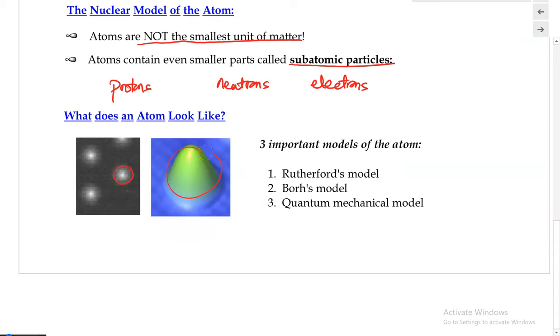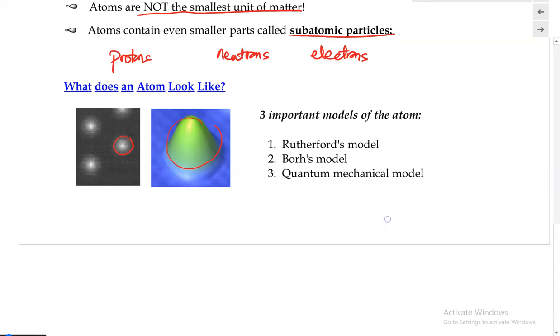So these are some of the images of the atom that were taken using some of the most advanced technology that we have. So we don't really know what an atom actually looks like in good detail.